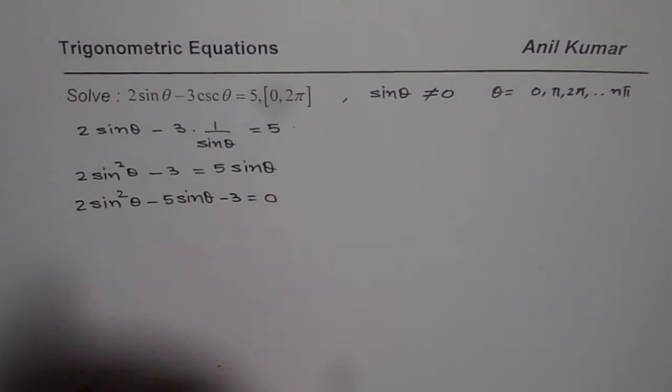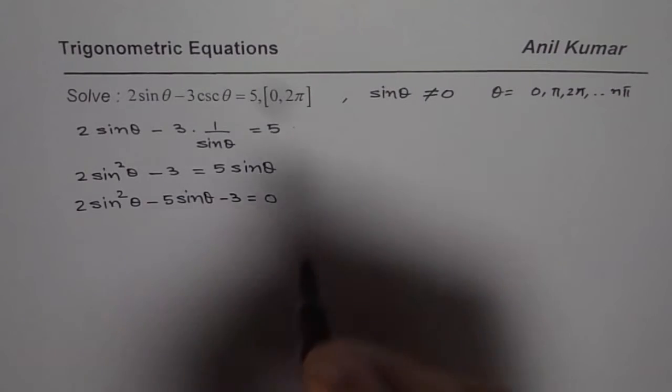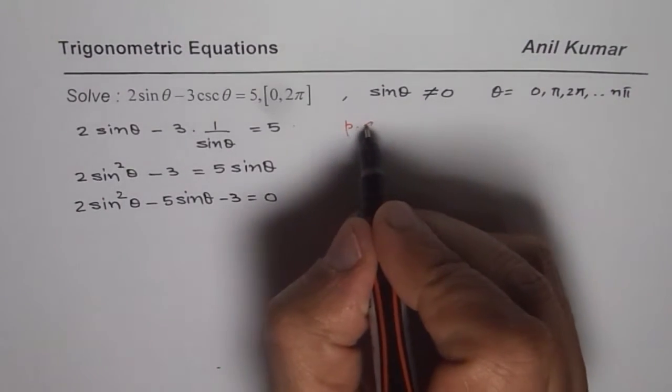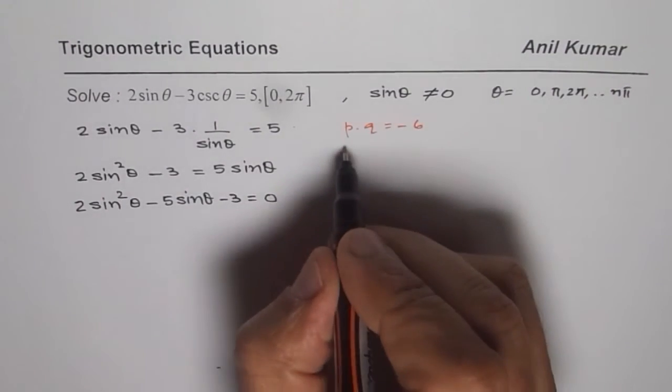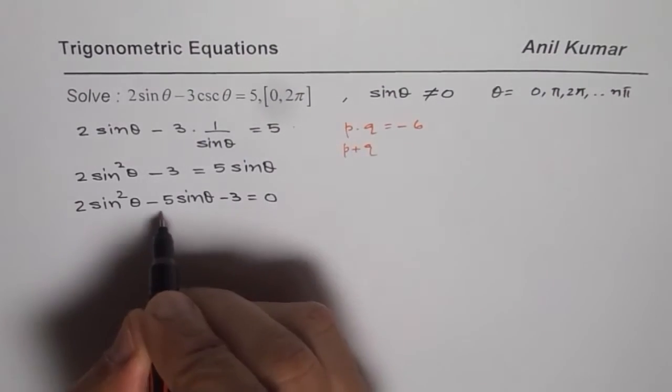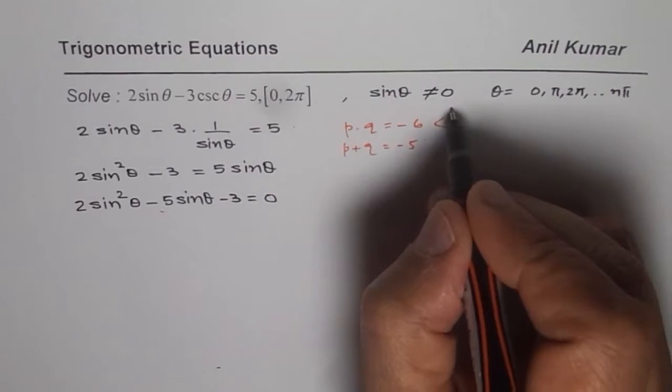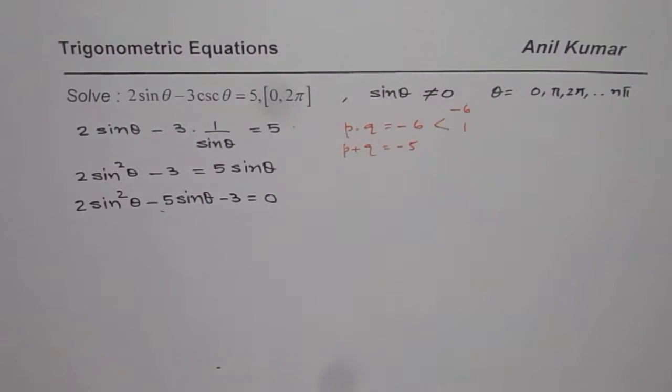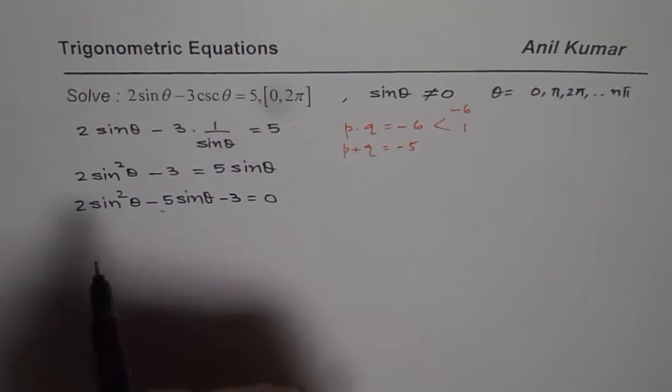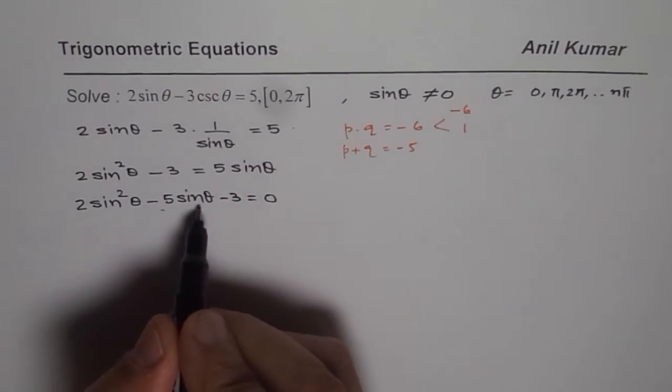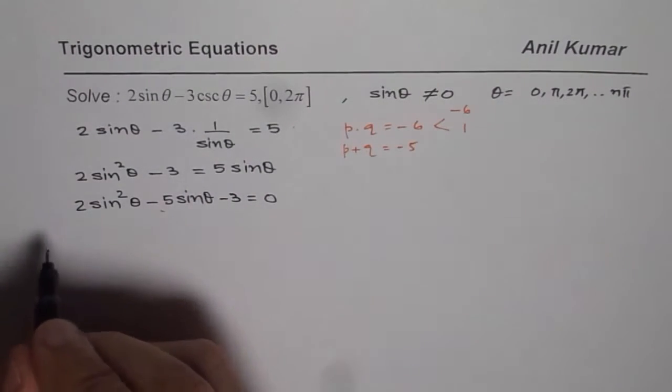So now you can factor this equation. To factor, you are looking for a product of minus 6. So you need to multiply two numbers P and Q to get minus 6, and their sum should be minus 5. The two numbers are minus 6 and plus 1. So we can write minus 5 sin theta as combination of these two.